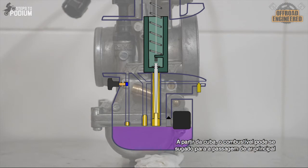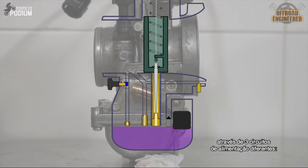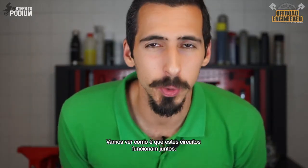From the float bowl, the fuel can be sucked into the main air passage through three different feeding circuits. The choke circuit, the idle circuit, and the main circuit. Let's see how all these circuits work together.